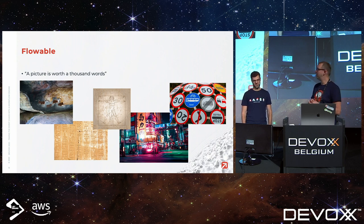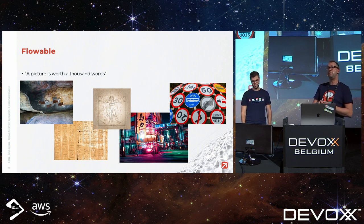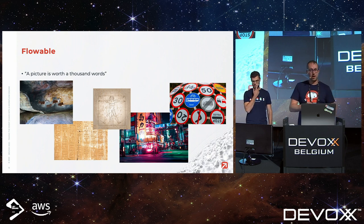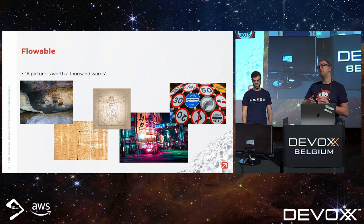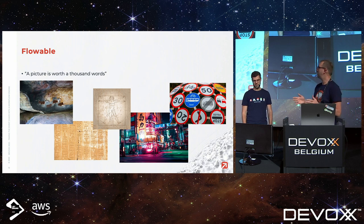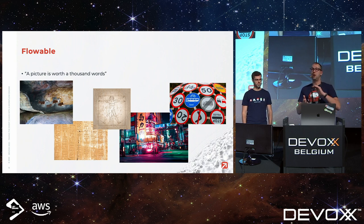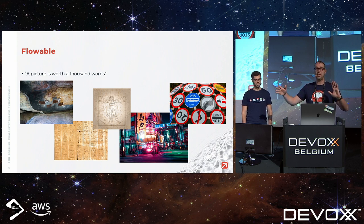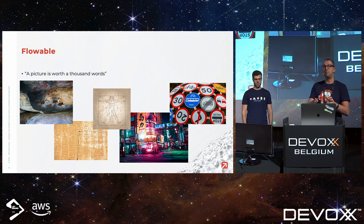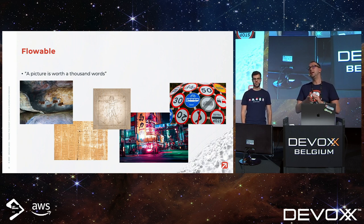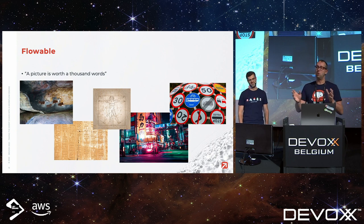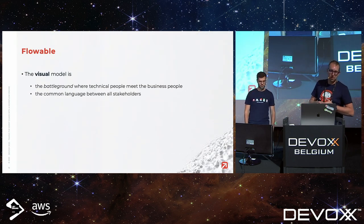If you walk around tonight you see advertising trying to lure you in with visualizations. On the road, signs are pictures telling you what you can and can't do — not big blobs of text. Our brains have been wired on an evolutionary scale to discern information very fast from a picture. Text and reading are skills we've acquired very recently in our whole evolution.